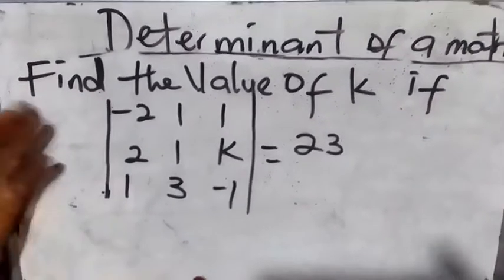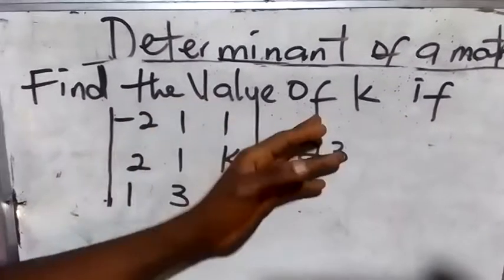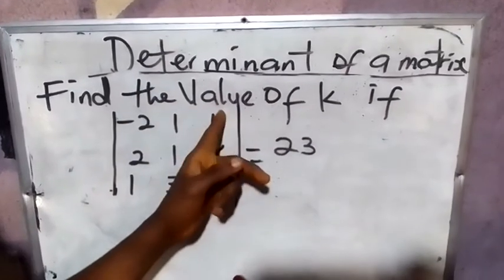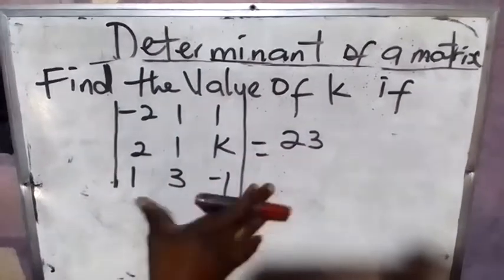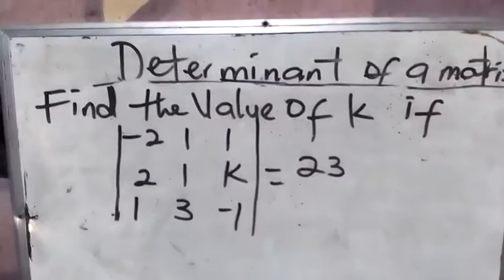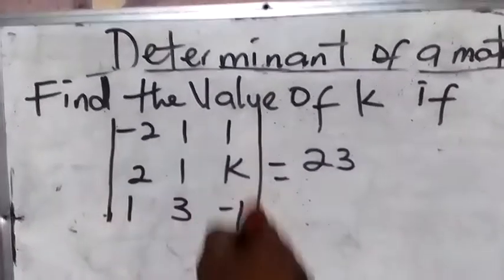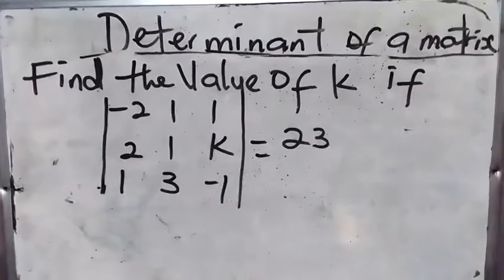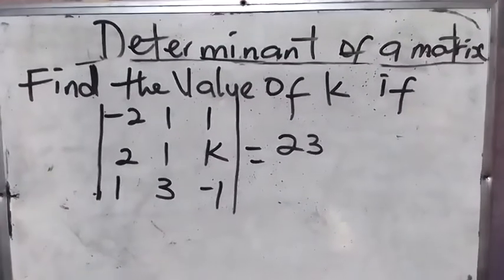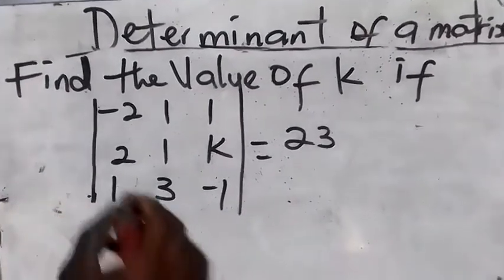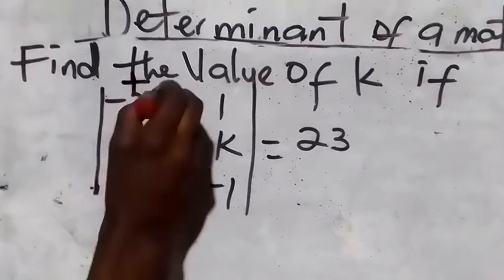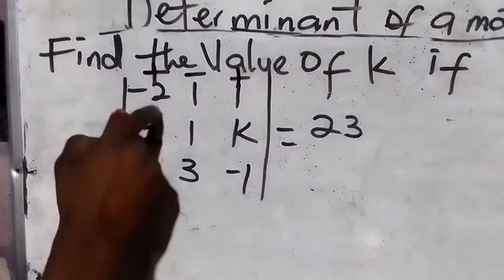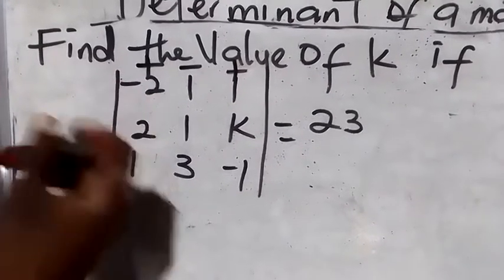In this matrix, find the value of k. This is a three by three matrix — when you see straight lines like this, those lines mean determinants. When you are looking for a three by three determinant, the first thing you have to do is write plus, minus, plus. It's very important, don't forget that.